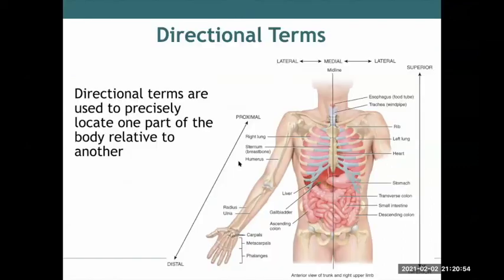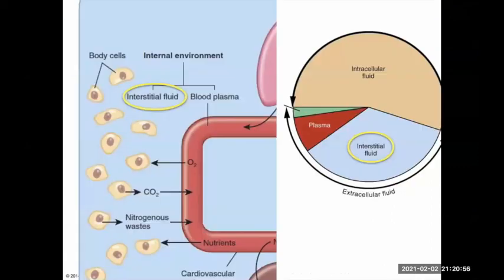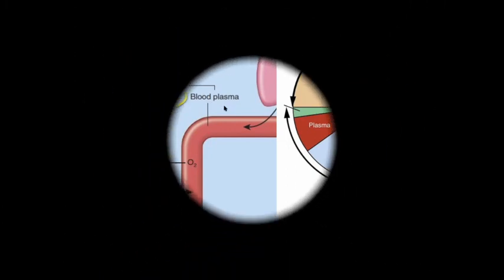So that's the whole fluid compartment overview — just to give you more concrete examples of what's shown in those graphs. The intracellular compartment is actually a hundred trillion individual little compartments. Now you know where interstitial fluid fits in the picture.